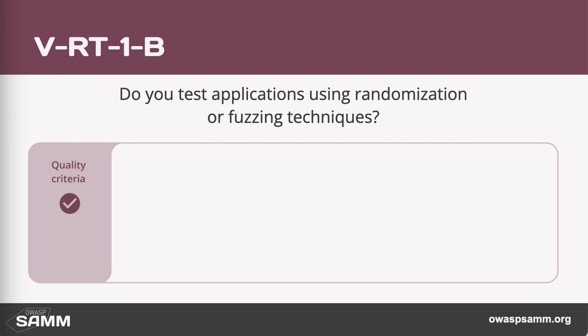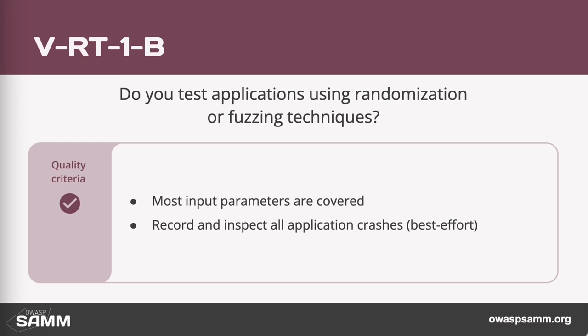At level one, the question is: are you fuzzing? The quality criteria here are pretty straightforward — if you are fuzzing, it's typically a yes answer. You need to cover most input parameters. If you have a form with 100 inputs and you're just fuzzing one of them, you probably cannot count this as a yes answer. And you also need to record and inspect all application crashes.